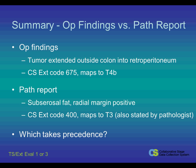Let's look at a summary of the operative findings versus the pathology report. The operative findings show that the tumor has extended outside the colon into the retroperitoneum, meaning the CS extension code would be 675, which maps to a T4B. The path report states that the subserosal fat was invaded and the radial margin was positive, which would be CS extension code 400, mapping to a T3. T3 was also stated by the pathologist.